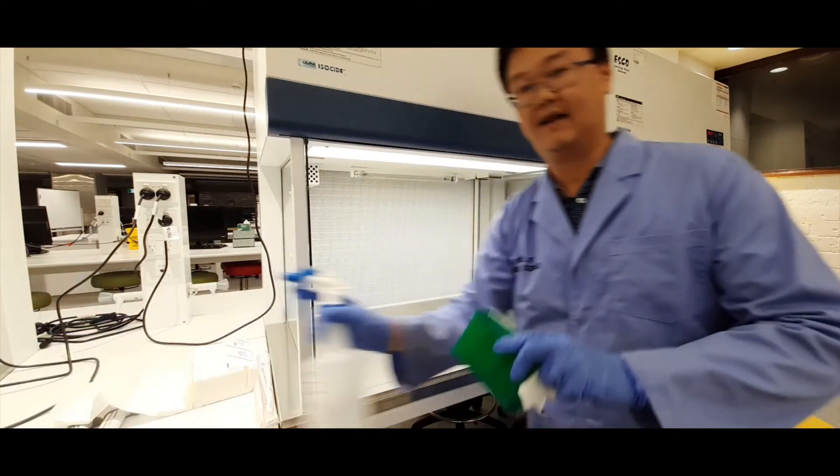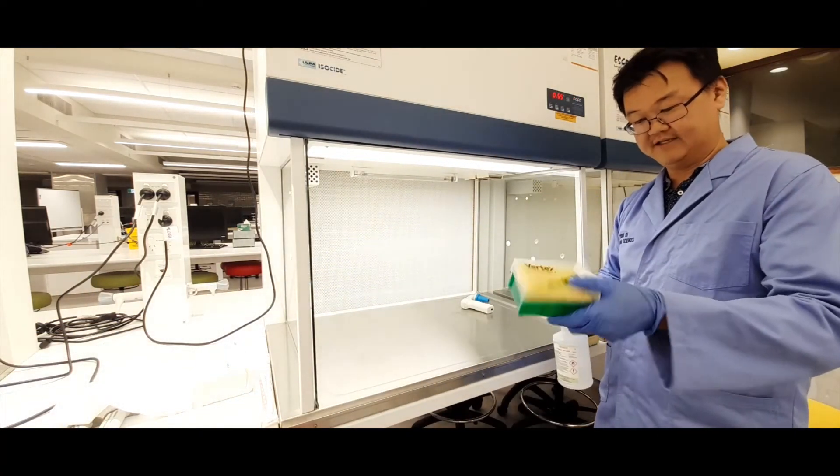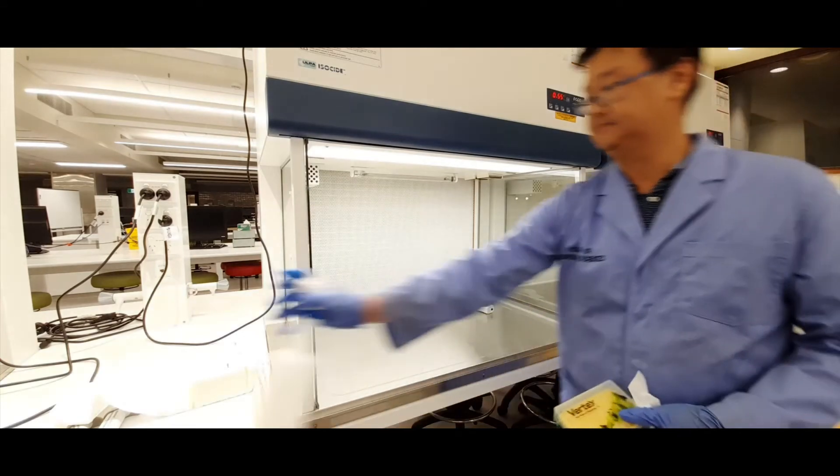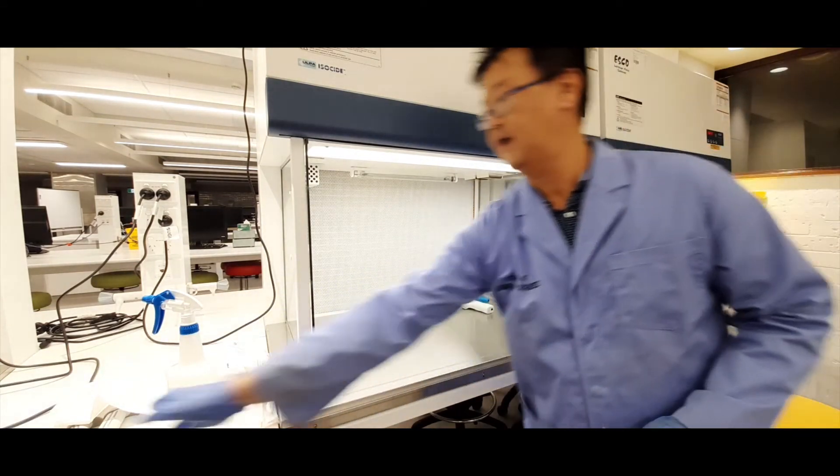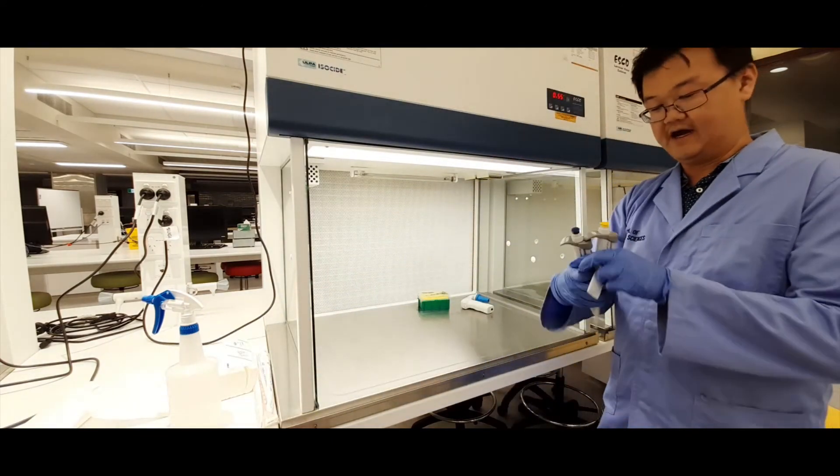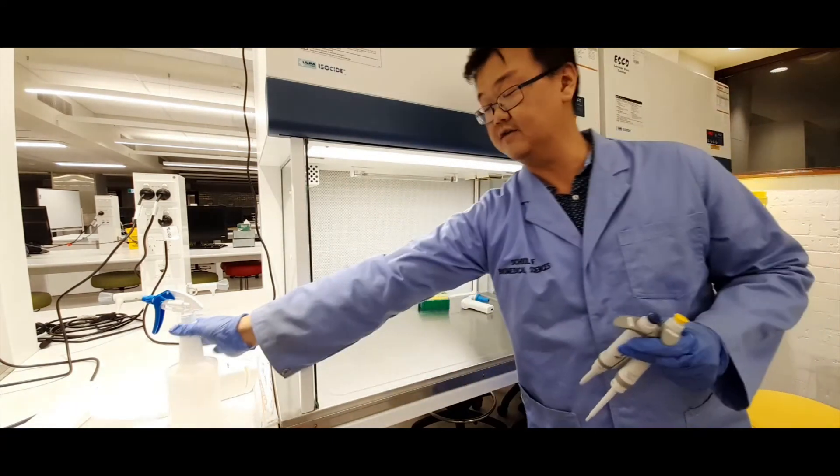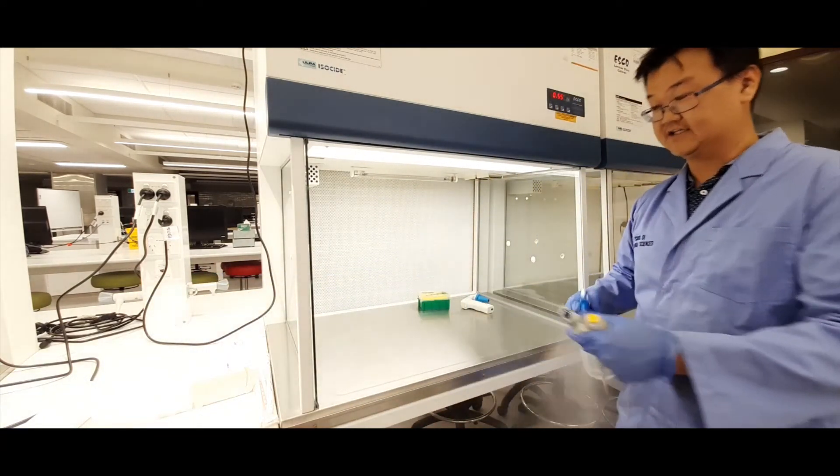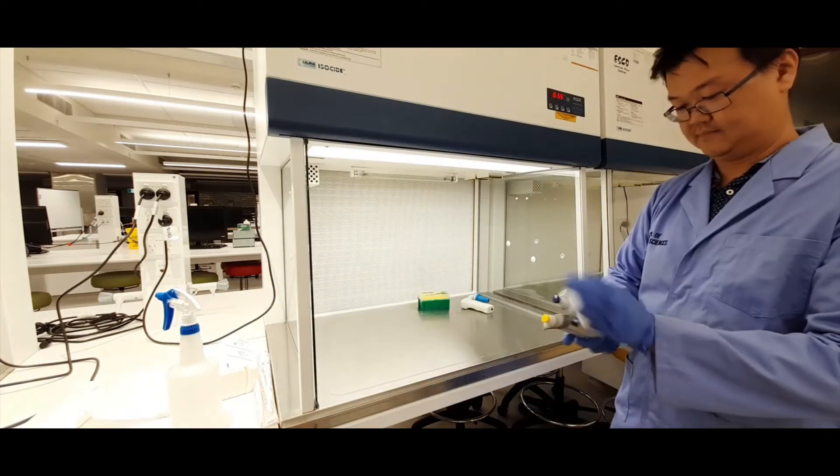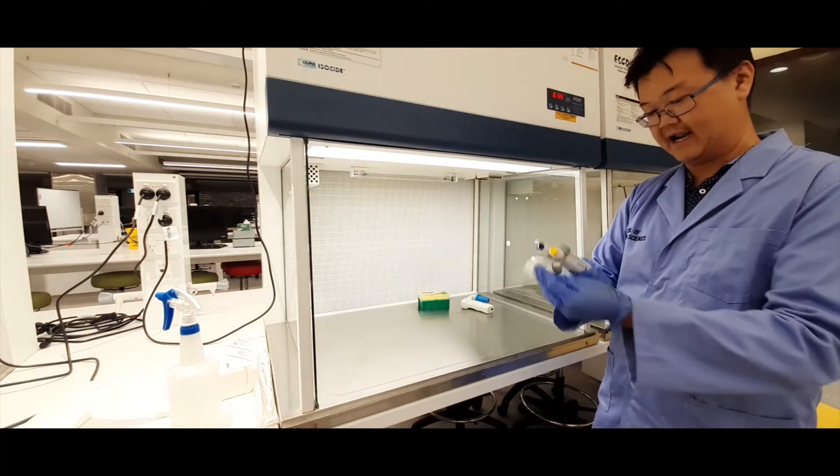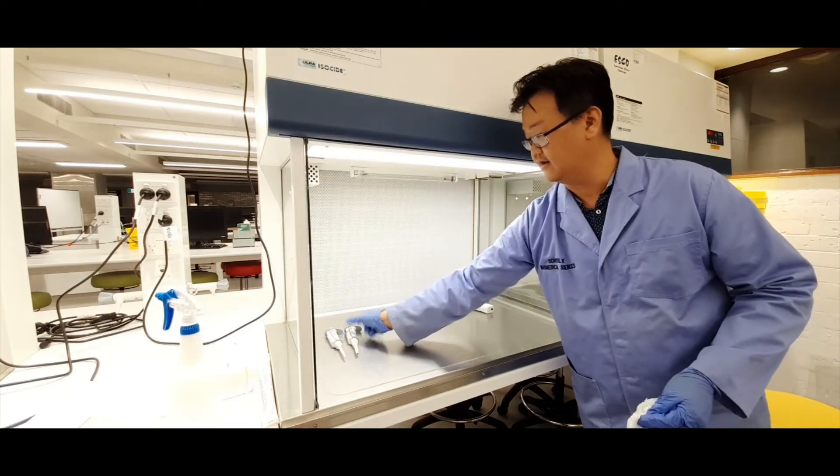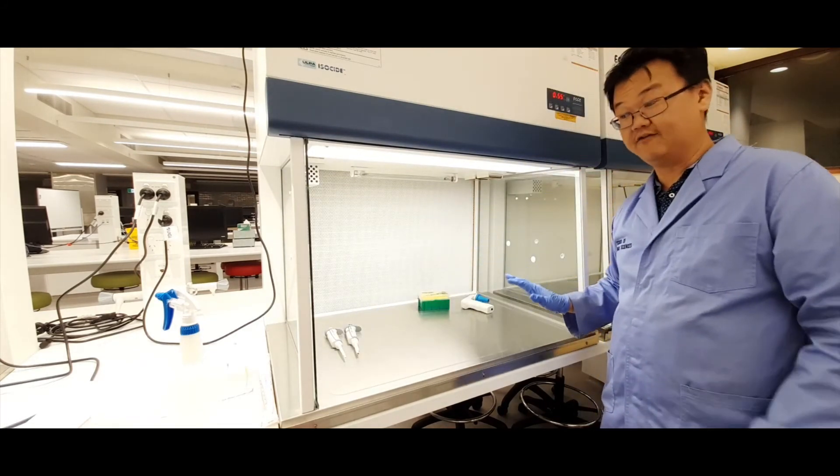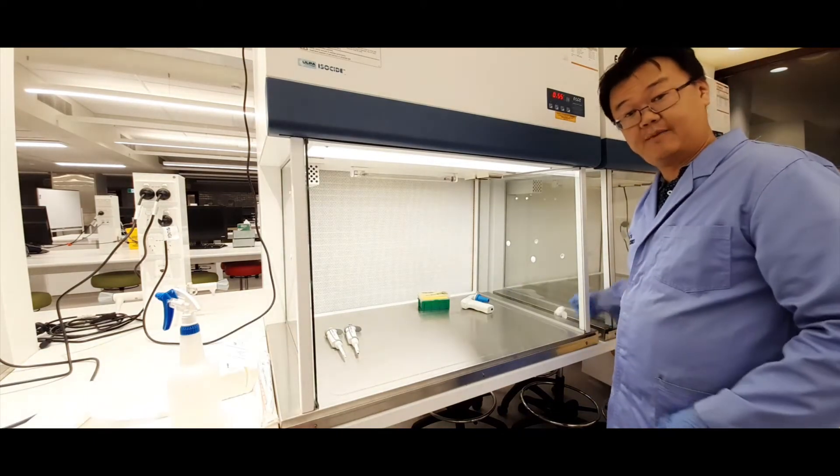You should do that with something like a tip box as well. And here I've got a couple of automatic pipettes that I might be using for an experiment, so we'll just give that a spray, wipe down, and then position that in that work surface ready for your cell culture experiment.